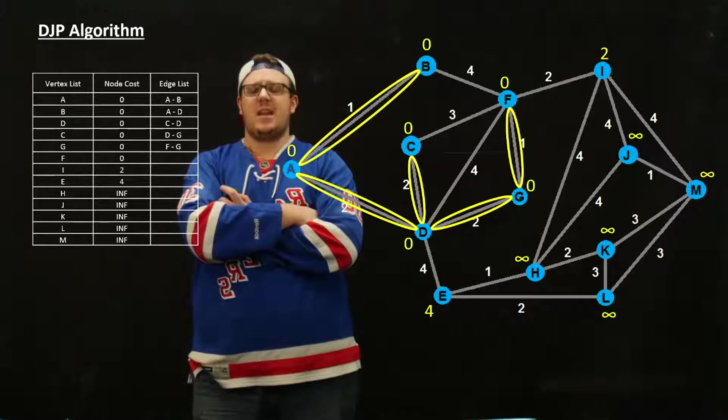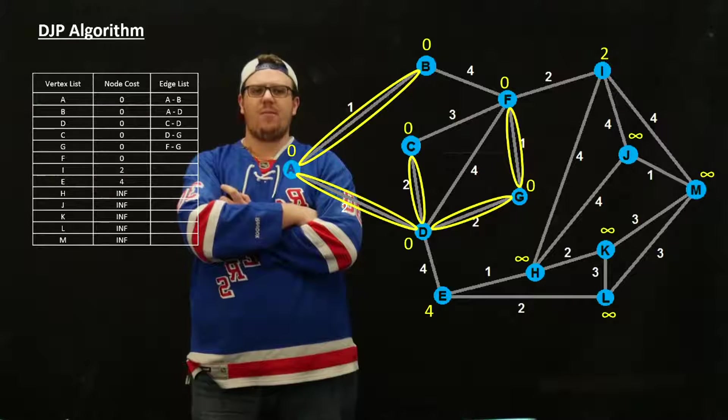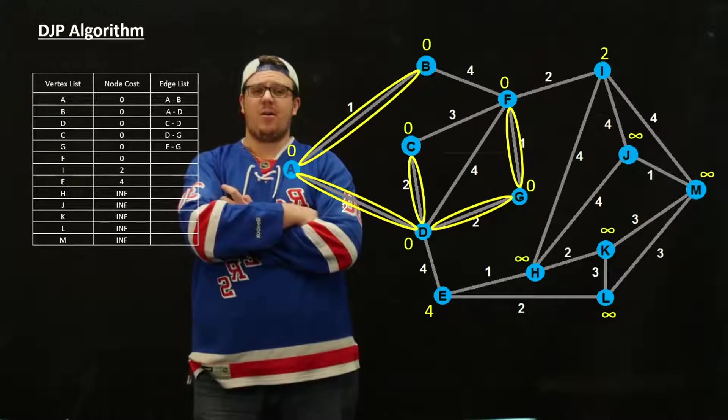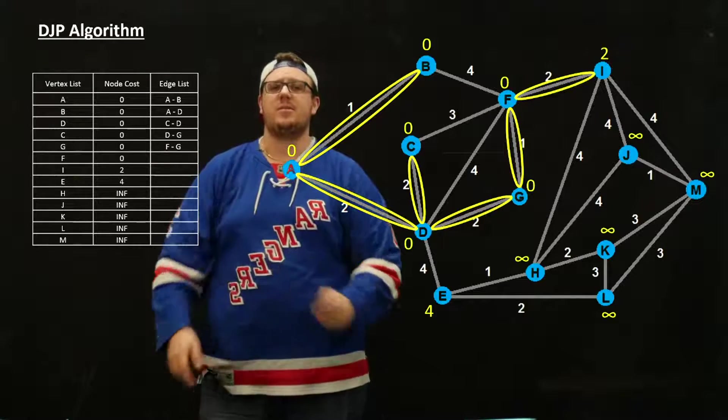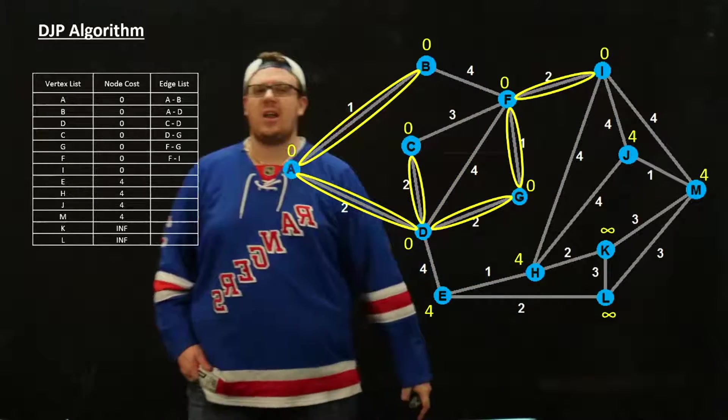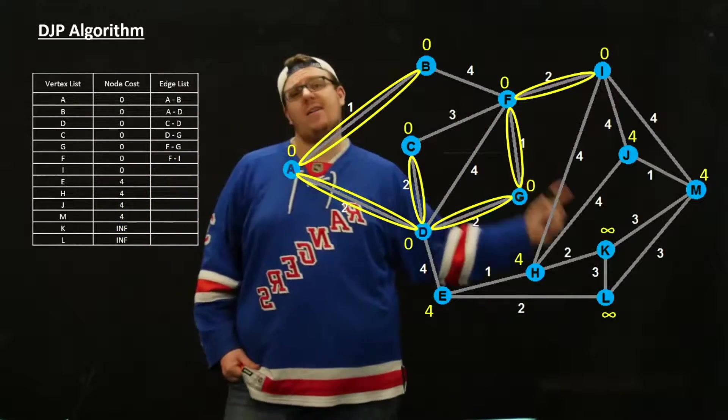So we're going to add I to the tree now, update that to zero, and then add all the adjacent nodes. We end up with J, H, and M all getting added now, but they all have a weight of 4.